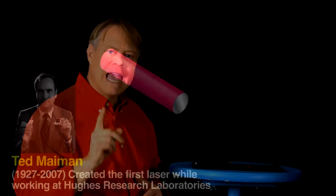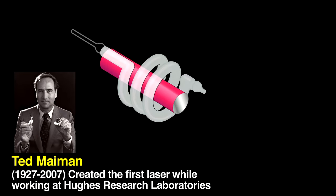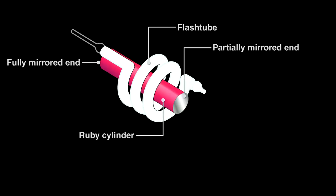In 1960, Ted Maiman demonstrated the first laser by taking a cylinder of ruby and surrounding it with a xenon arc flash lamp used in aerial photography. An intense burst of light from the lamp initiates lasing. To see how it works, let's look at what happens with a weaker lamp.